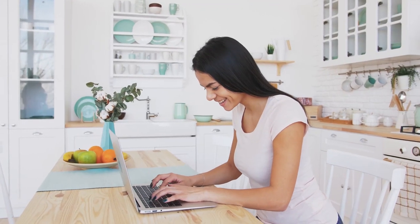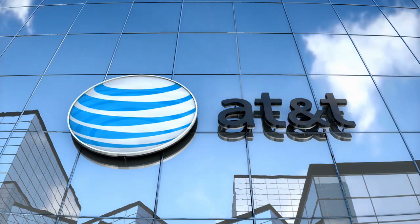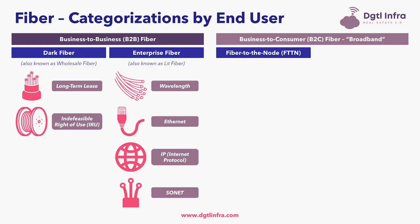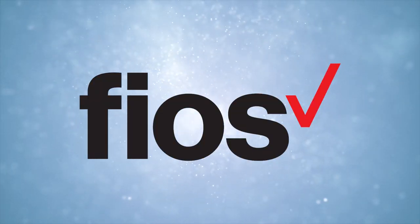Business-to-consumer fiber, or broadband, has its deployments fall into two different categories. First is fiber-to-the-node, abbreviated FTTN, and companies like AT&T and Lumen Technologies are examples of companies that have the largest fiber-to-the-node deployments. Second is fiber-to-the-home, abbreviated FTTH, and Verizon Fios is an example of one of the largest fiber-to-the-home deployments.